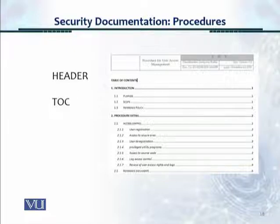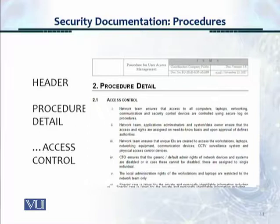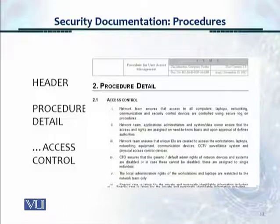The table of contents includes an introduction section and a procedure detail section. The first page of the actual SOP document has an introduction, a purpose section, a scope section, and a reference policy section. In the procedure detail section, we talk about access control and lay out the specific requirements or clauses of the access control SOP.